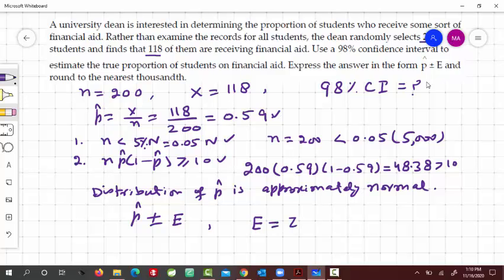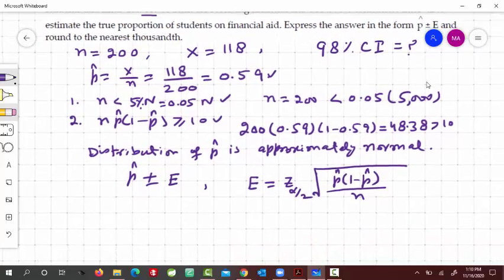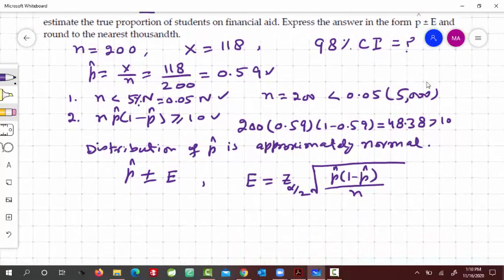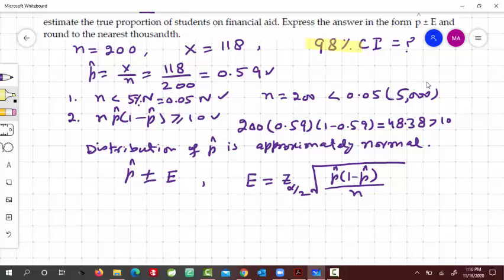z sub alpha by 2, and then the root of p hat times 1 minus p hat divided by n. So now since we have this 98% confidence interval, from here alpha would be 2%. We can say that alpha is equal to 2%, 0.02.